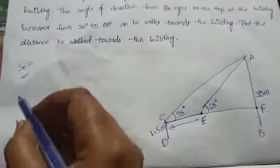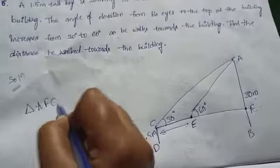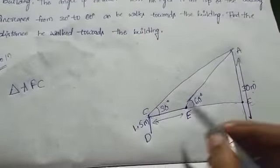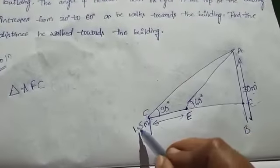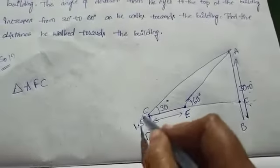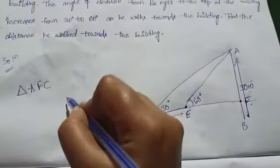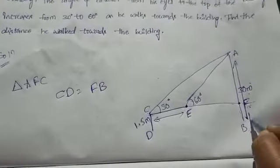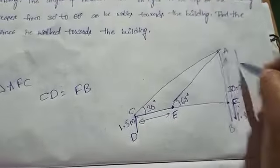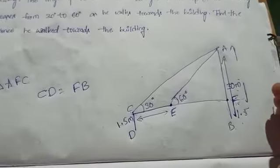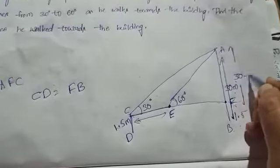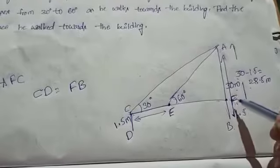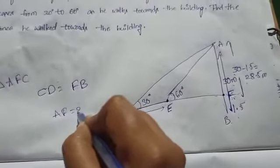This is the right angle triangle AFC. The distance AB is 30 meters. We know CD equals 1.5 meters, and CD equals BF. Therefore AF equals AB minus BF, which is 30 meters minus 1.5 meters, equal to 28.5 meters. So AF equals 28.5 meters.